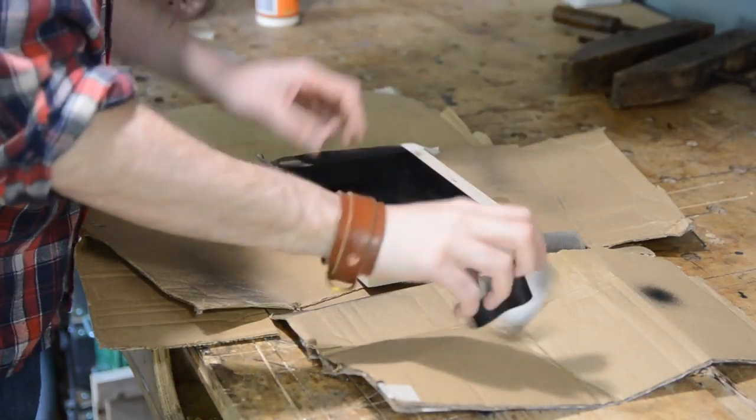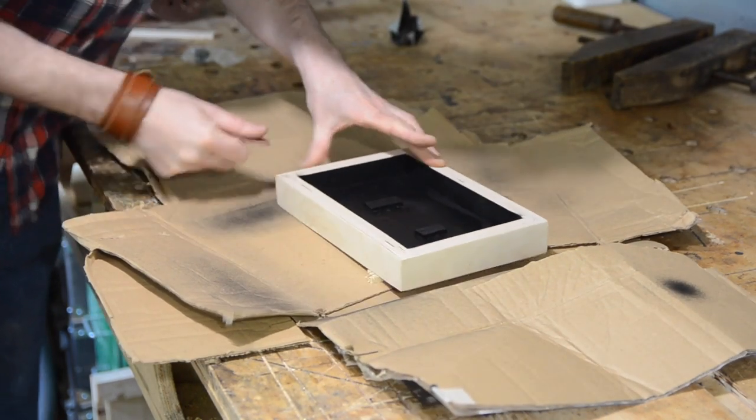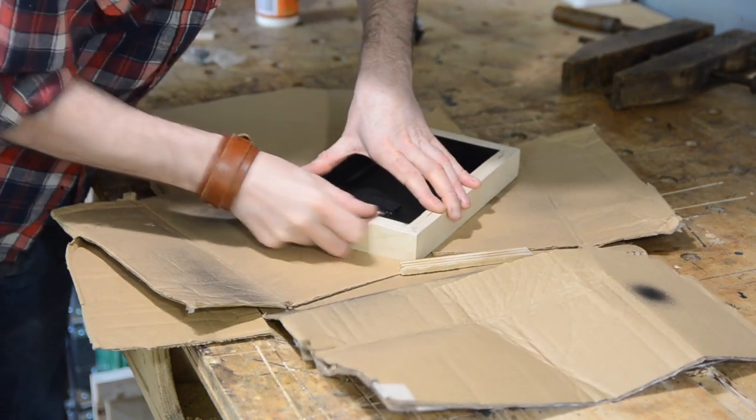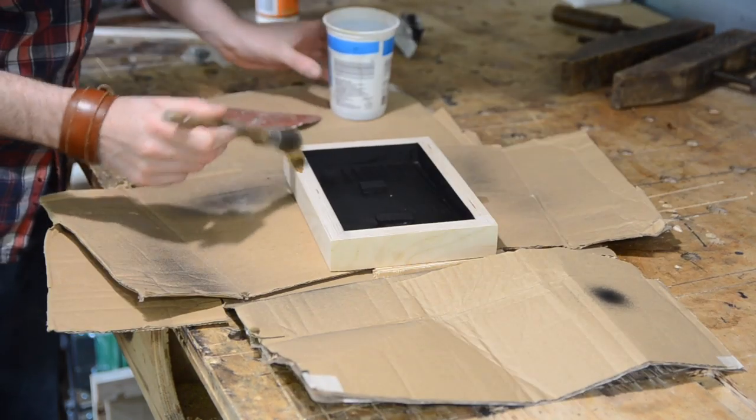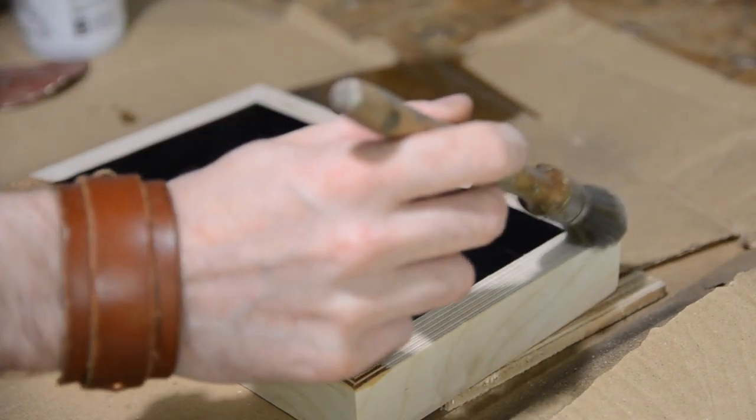When the paint had dried I could remove all the strips of masking tape and then give it all a hand sand. I give the exposed wood a coat of Danish oil and it really brings out the colours in the layers of the ply.